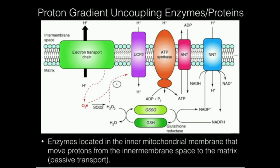In the context of the respiratory chain, coupling proteins or coupling enzymes are enzymes that move hydrogen ions from the inner membrane space into the matrix and couple that movement with the synthesis of ATP. Obviously, the only example of that is ATP synthase.